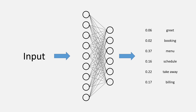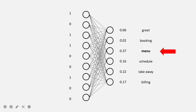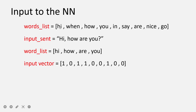Now let's see how we are going to process the input. In the last video we created the vocabulary — I called it words list, but you can also call it vocabulary. There were roughly around 48 words. In the slide I only show nine of them: hi, when, how, you, in, say, are, nice, and go. So the input sentence — let's say the customer writes 'hi how are you'. The first thing we do is remove the punctuations, then we do stemming, and lowercasing is also applied.